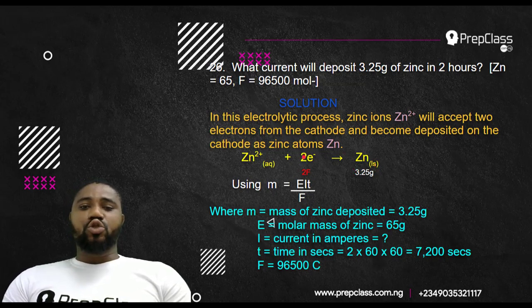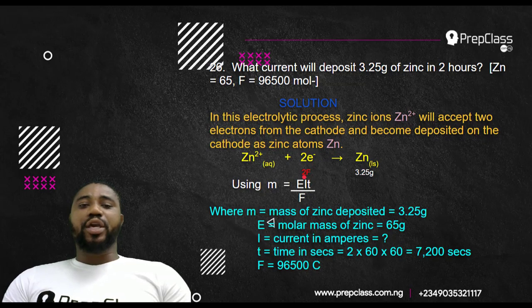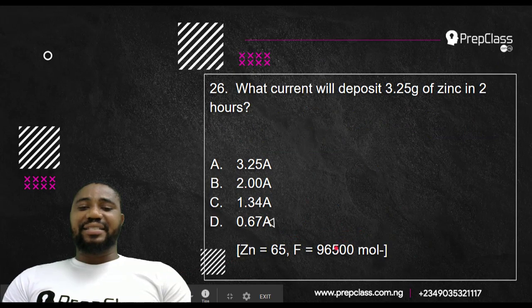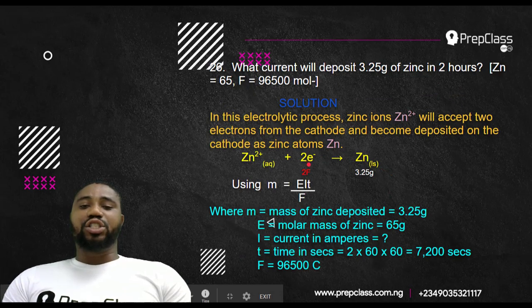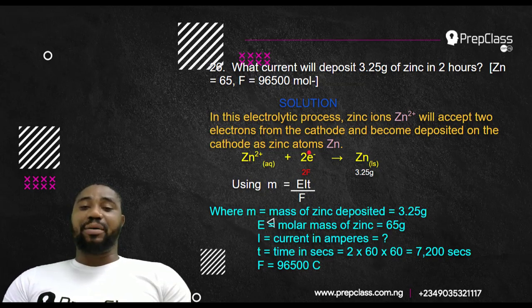Because of these two electrons, you are going to be making use of 2F, 2 Faraday. One Faraday is 96,500 coulombs. So for two electrons being accepted or discharged, 2 Faraday. If in the case of silver, Ag+, only one electron is accepted, you use 1 Faraday. In the case of zinc, Zn2+, two electrons are accepted, you use 2 Faraday.